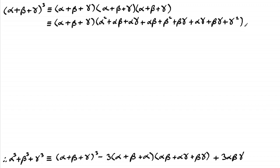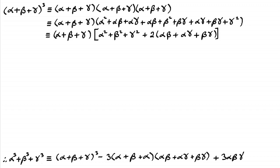Next, simplify the last bracket by grouping terms. We get the sum of squares — alpha squared plus beta squared plus gamma squared. Then we notice alpha beta appears twice, and similarly there are two lots of alpha gamma and two lots of beta gamma, so we pull out two as a common factor across those terms.